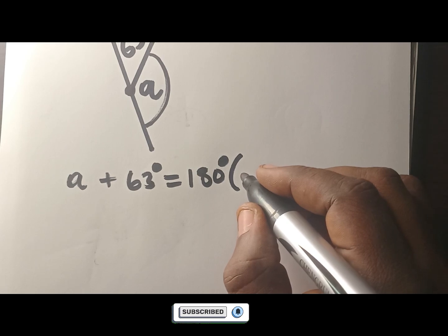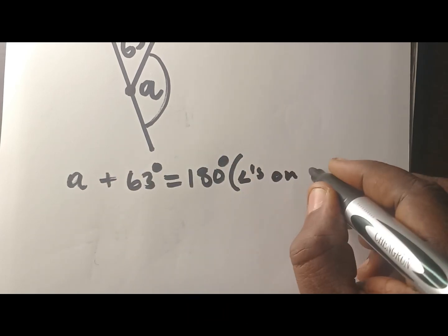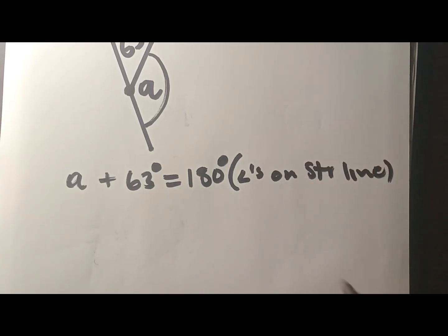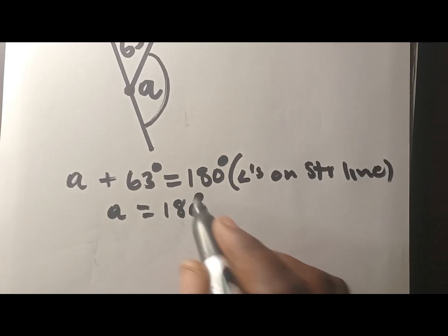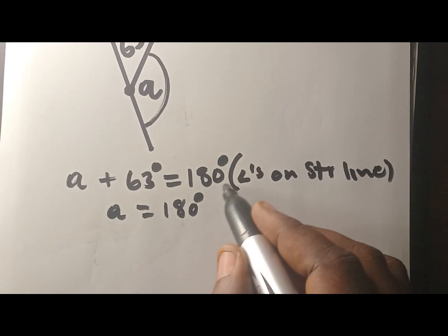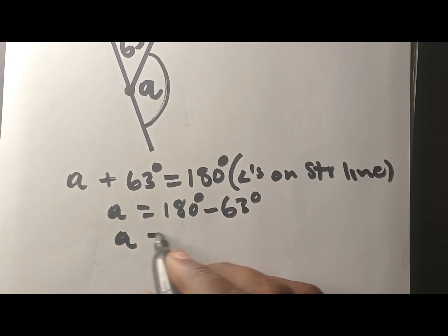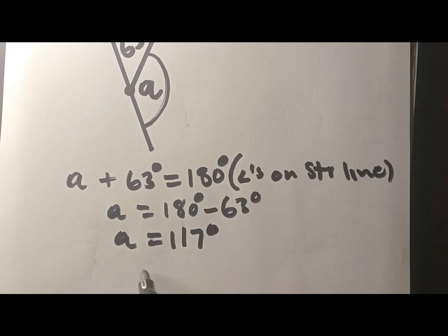We are told that in mathematics — angles on a straight line add up to 180. We are telling the marker why we say this is equal to 180. The next step is to fix this using algebra: take 63 to the other side, and you have A equal to 180 minus 63, which gives you A = 117 degrees.